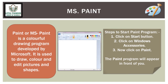MSPaint, or Paint, is a colorful drawing program developed by Microsoft. It is used to draw, color, edit pictures and shapes. Here are the steps to start the Paint program: first, click on the Start button; then click on Windows Accessories; now click on Paint and the Paint program will open.